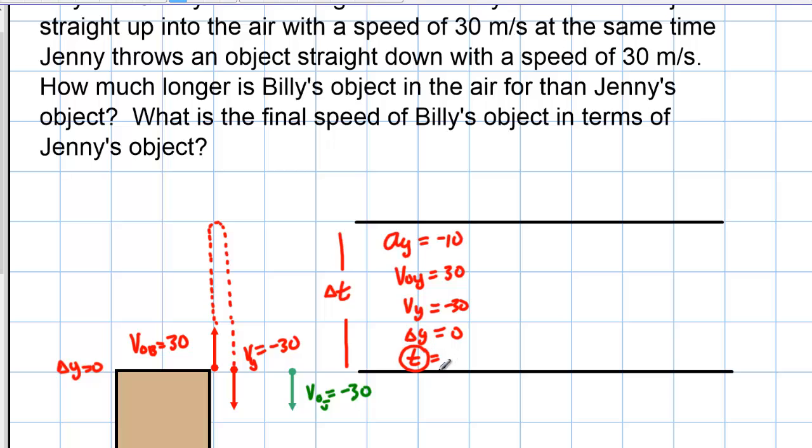Now, how many variables do we need to solve a kinematics equation with constant velocity? Does anybody know? We need four, or sorry, we need three variables to solve it. How many variables do I have here? One, two, three, four. I have four variables, right? Okay, that's good news. Why is that good news?